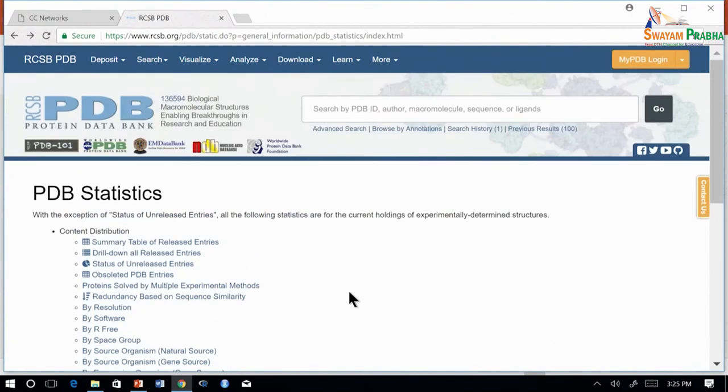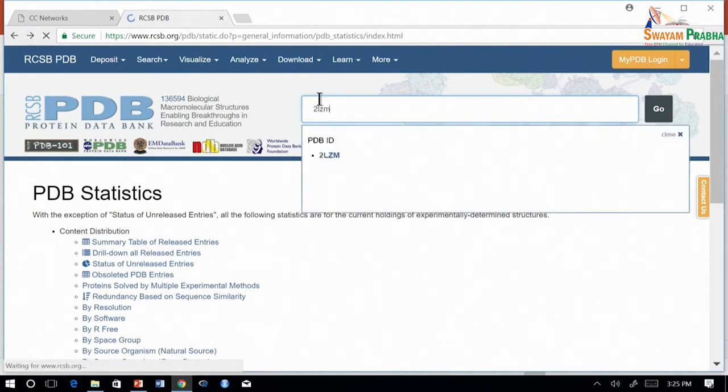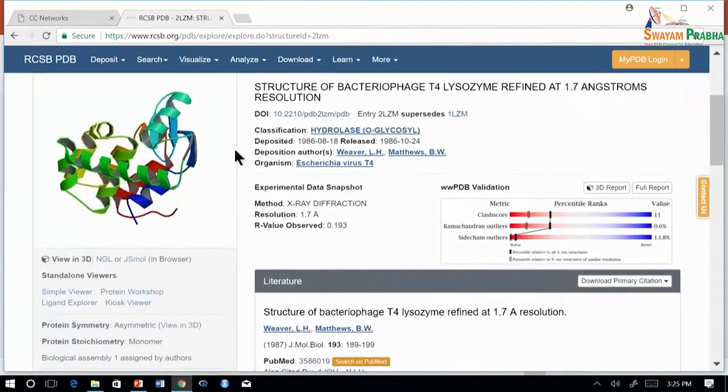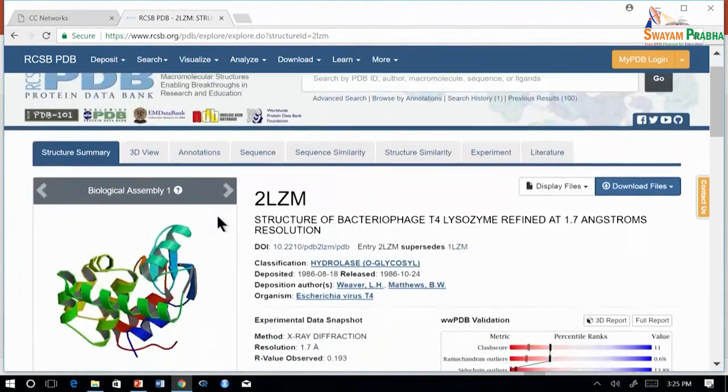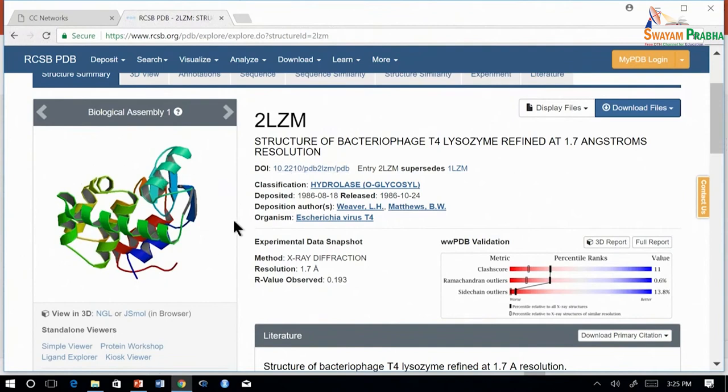Now let us go further with an example. We type 2LZM in the search bar and press enter. When we type any PDB ID, the website gives a summary page view of the structure. So we have a static view of the structure here, the title, as well as basic information about the experimental technique as well as the protein structure which is given here.